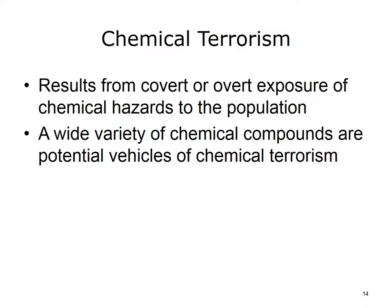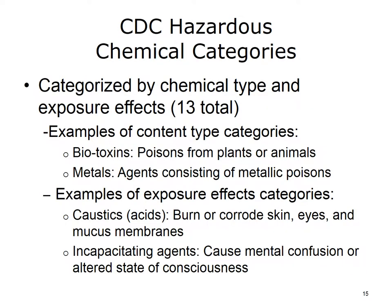Chemical terrorism—the exposure of the population to chemical hazards—is another concern of public health. As with other categories of terrorism, an attack could be either covert or overt. Both the National Toxic Substance Incidents Program and the Agency for Toxic Substances and Disease Registry participate in monitoring and efforts to mitigate risk of chemical terrorism. The CDC categorizes hazardous chemicals into 13 groups based on chemical type and exposure effects. Examples of chemical type include biotoxins—poisons from plants or animals—and metals—metallic poisons. Examples based on effects include caustics, which are chemicals that burn or corrode, and incapacitating agents, which cause mental confusion or altered states of consciousness.